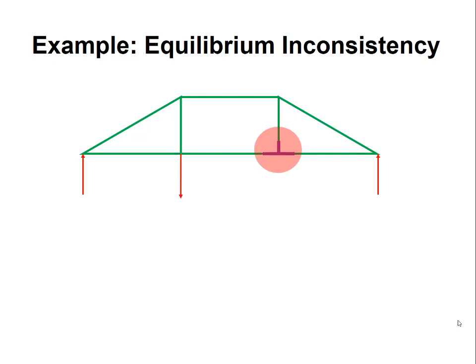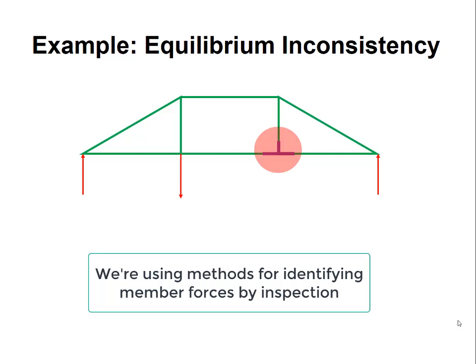If we look at the joint that's highlighted, I've shown the joint configuration there in darker lines. We can identify that the vertical member is a zero force member. Moving up to the next joint above, I'm showing the joint configuration, but I'm not showing the vertical member because I've determined it to be a zero force member. The other two members shown are two members joining at an angle. We know again, by our methods of determining zero force members, that the two members are themselves zero force members. And so we've identified three zero force members.